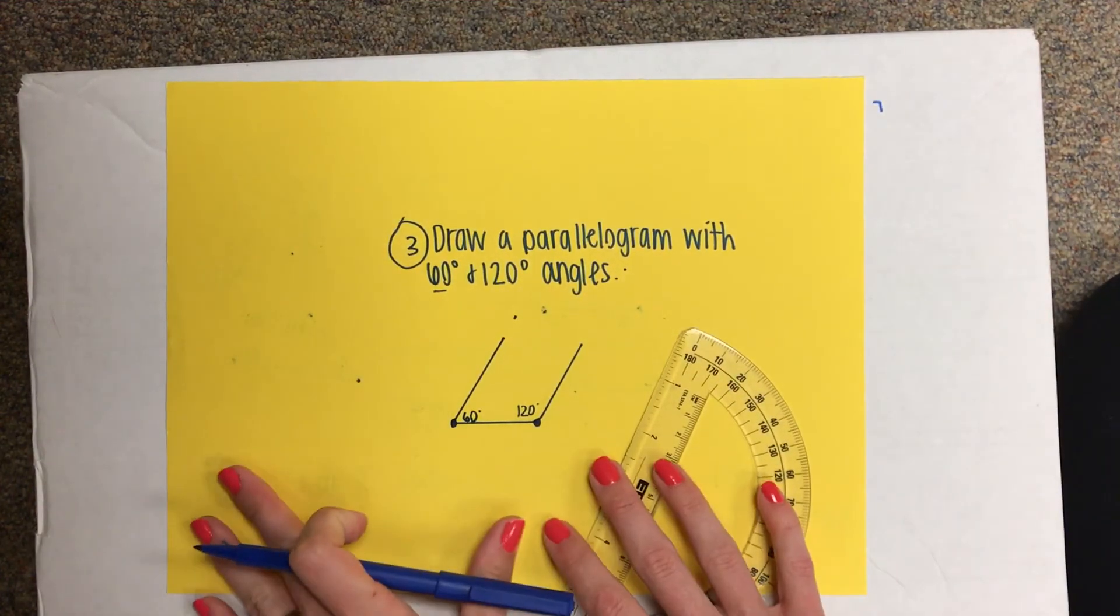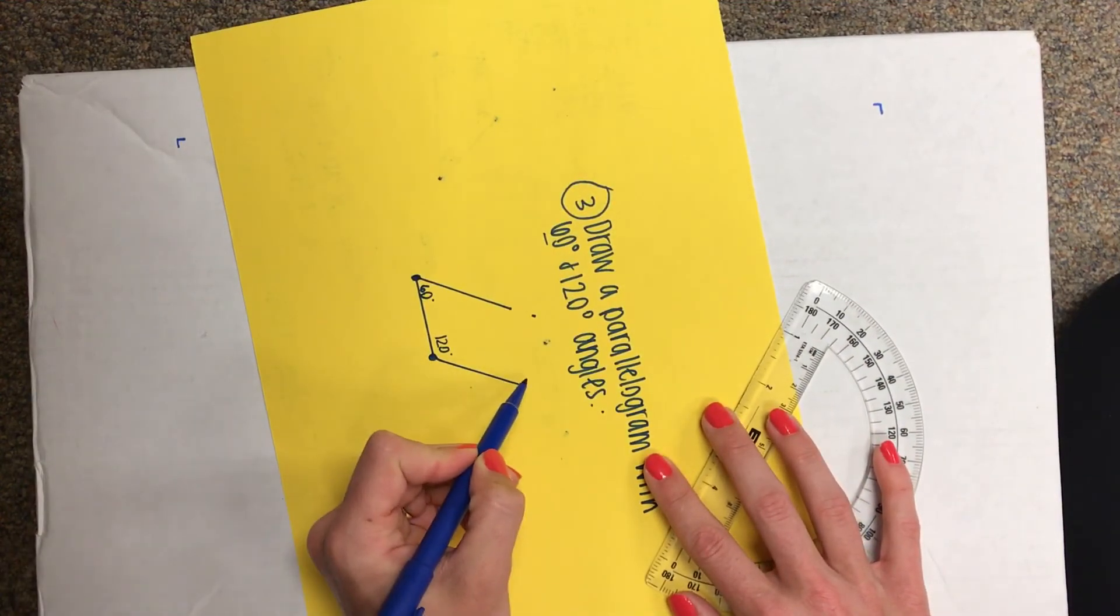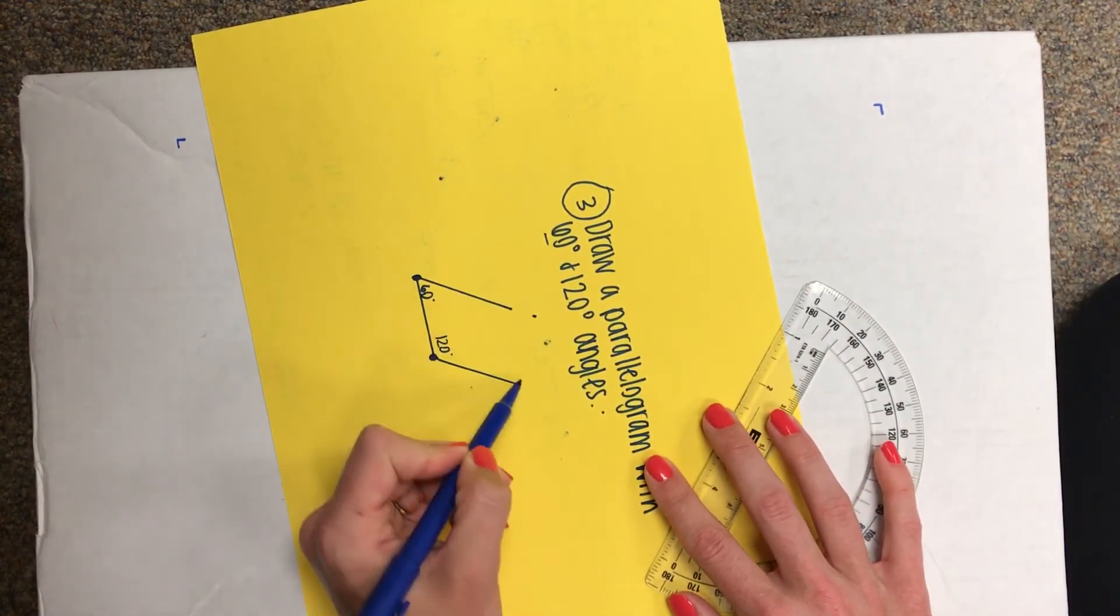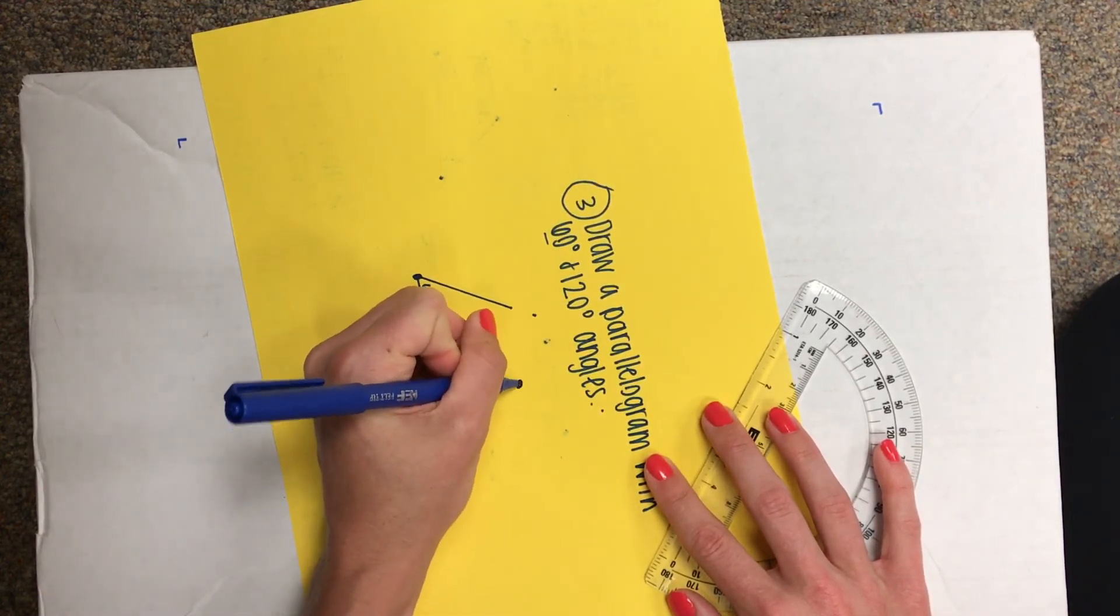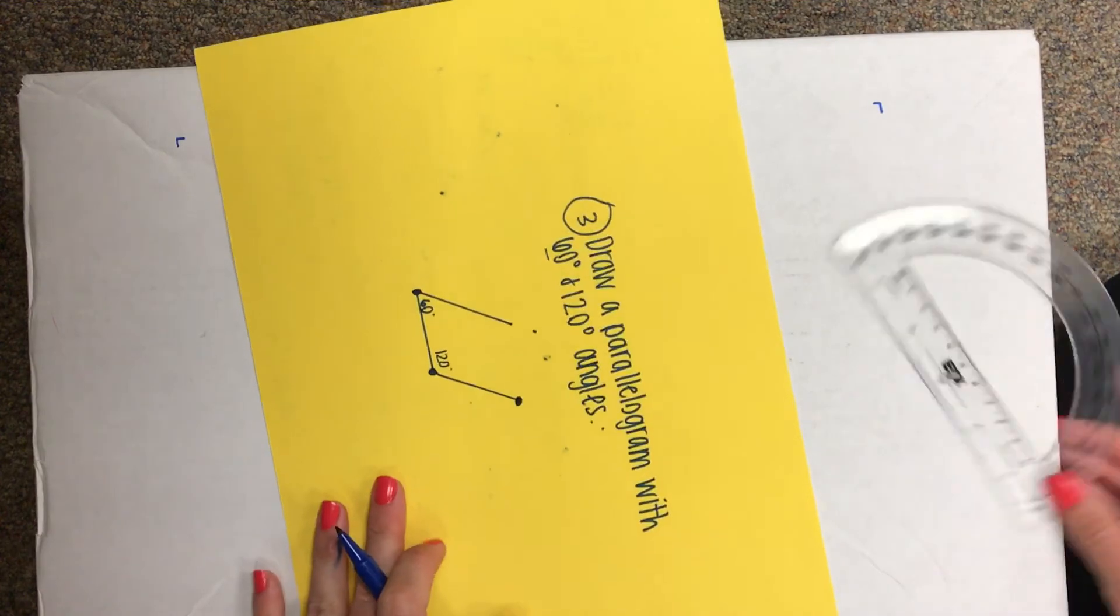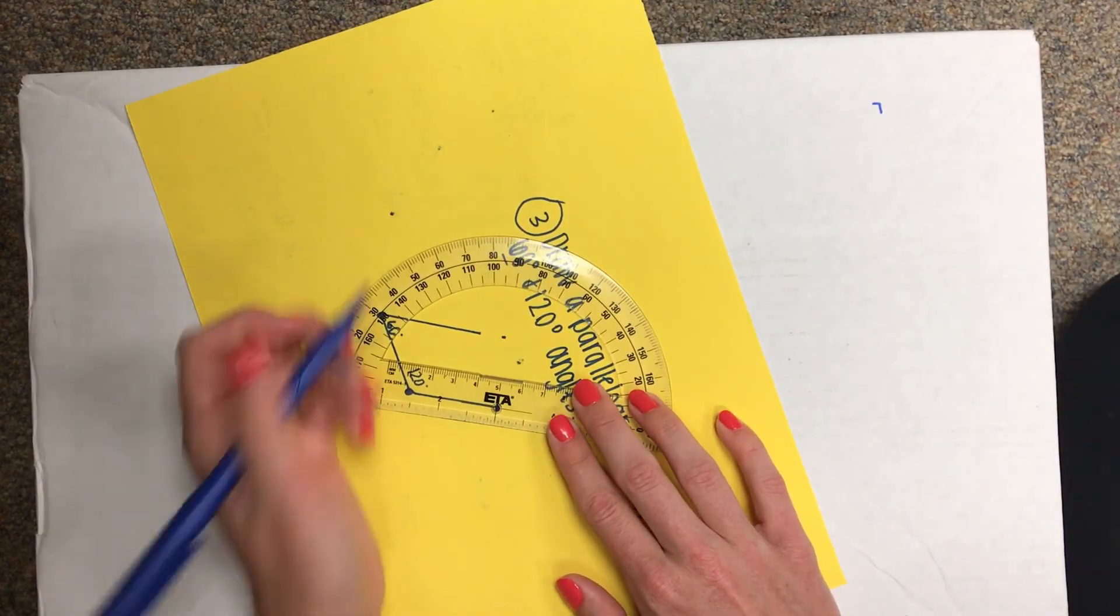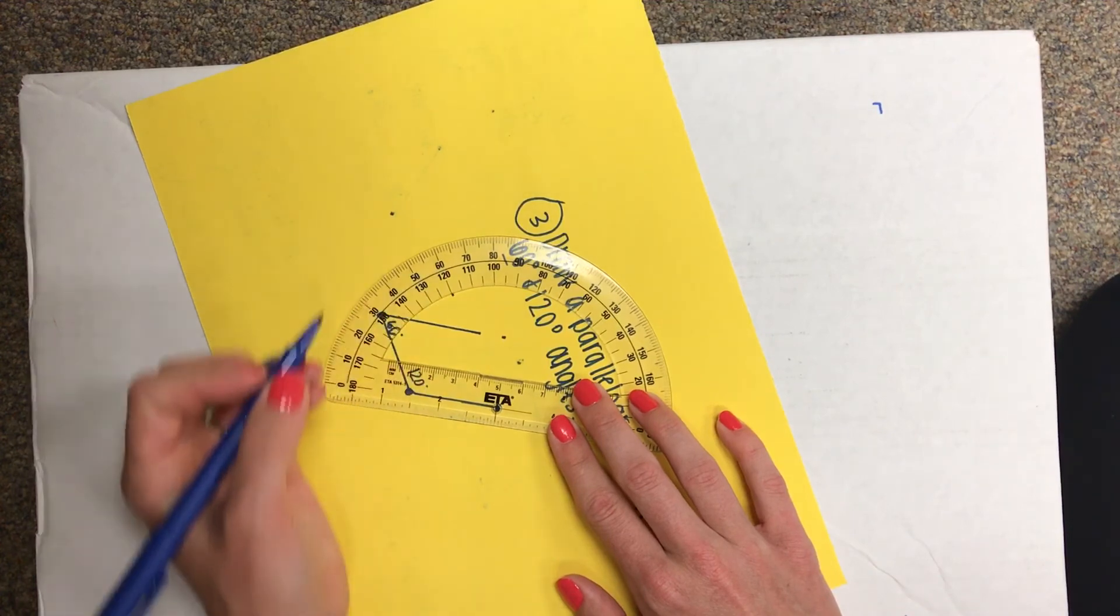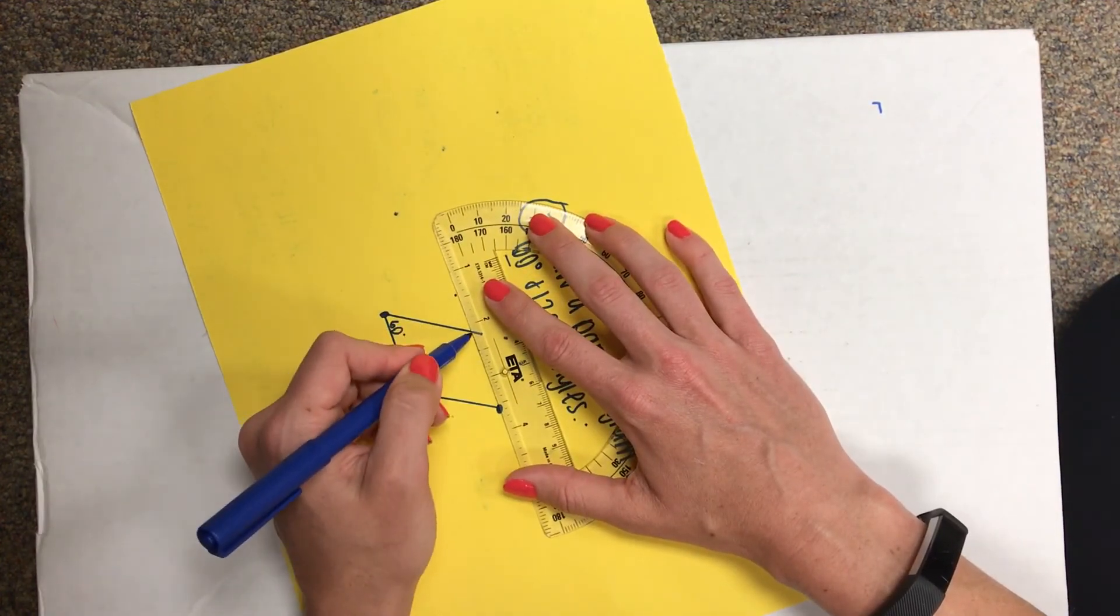And then all you've got to do is rotate your paper one time. If this one's 120, this one will have to be 60, because 60 has to be across from 60 in a parallelogram. I'm going to create my new dot for this line. Match up dot to dot, line to line. Here's my 60 degree mark. Make my dot, and connect.